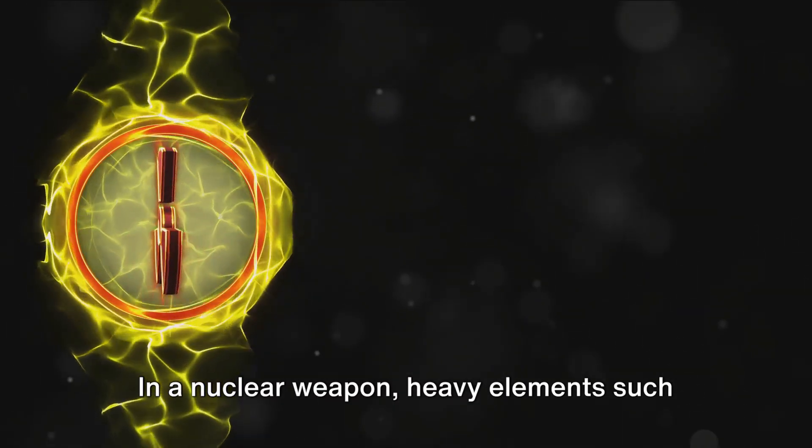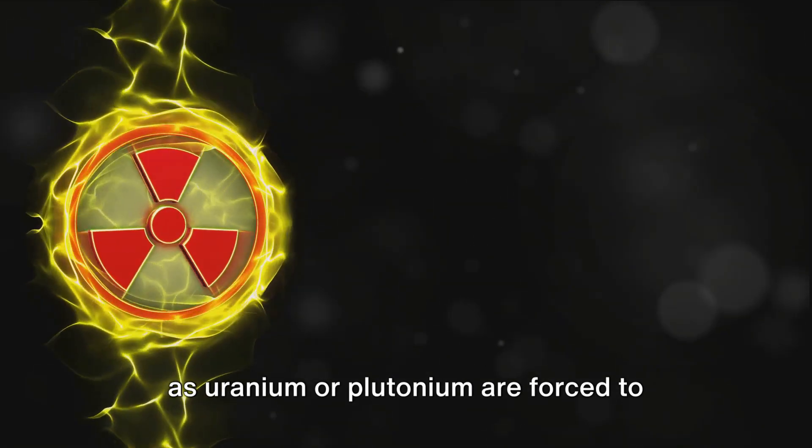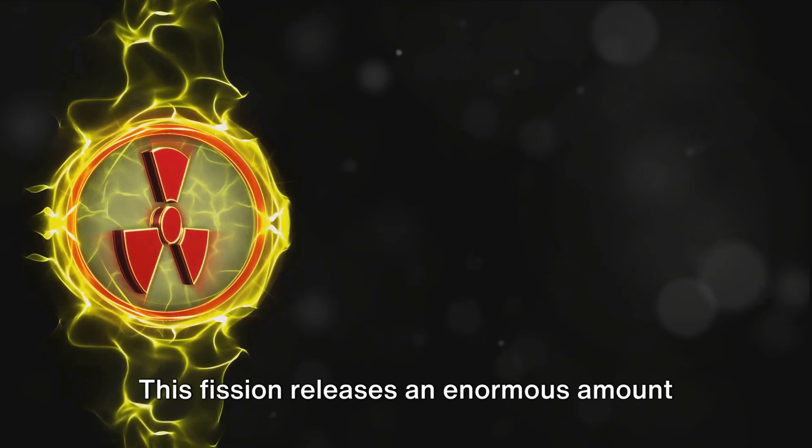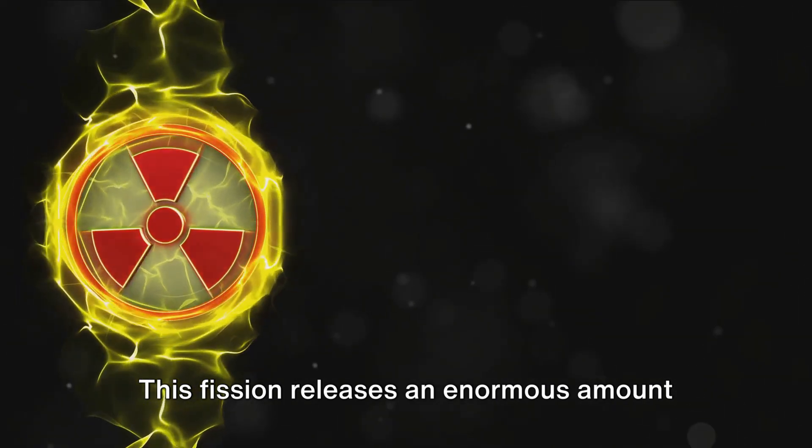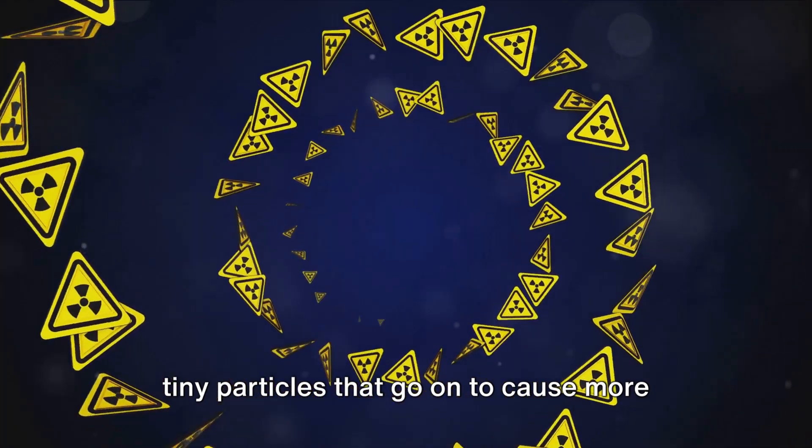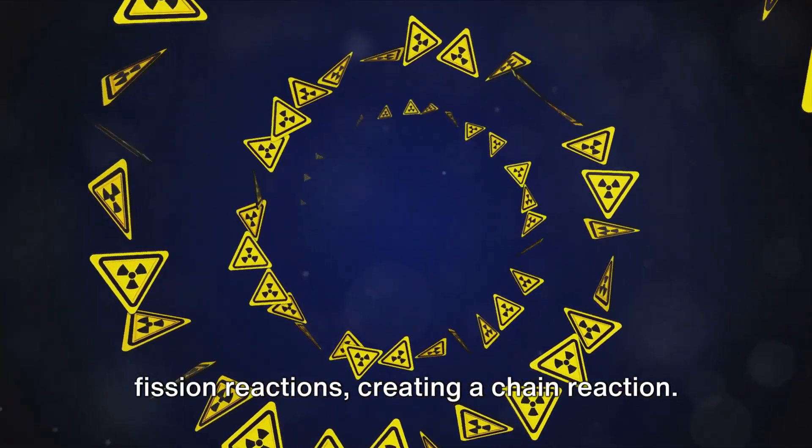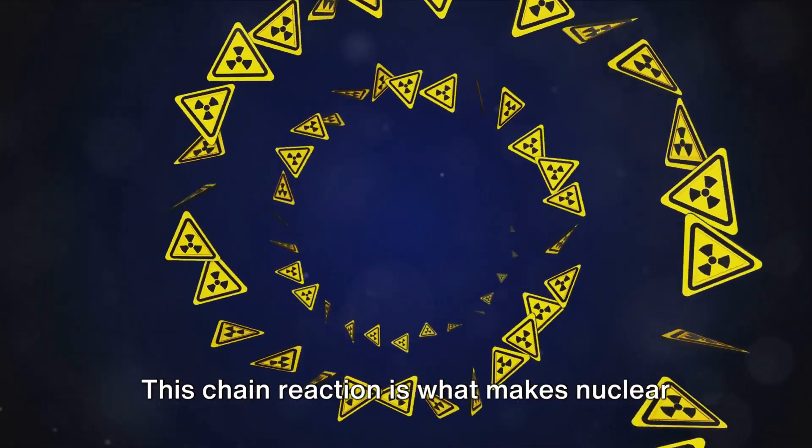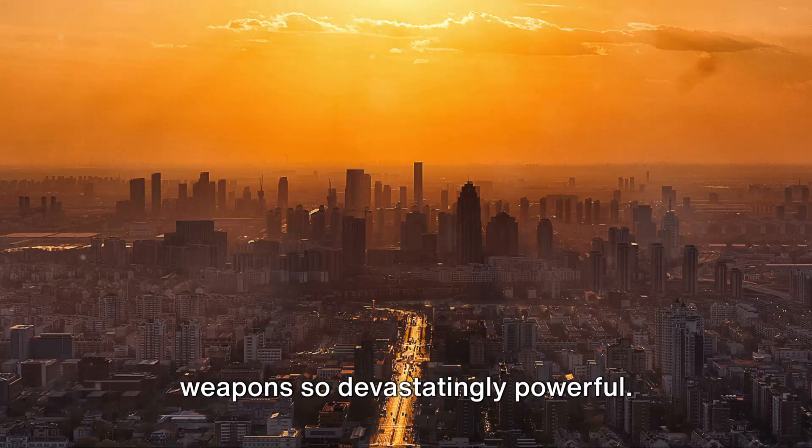In a nuclear weapon, heavy elements such as uranium or plutonium are forced to split or fission by a conventional explosion. This fission releases an enormous amount of energy, but it also produces neutrons, tiny particles that go on to cause more fission reactions, creating a chain reaction. This chain reaction is what makes nuclear weapons so devastatingly powerful.